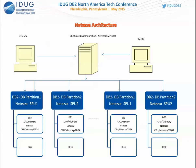In Netezza, the coordinator partition is called the SMP host — a Linux system running Red Hat Enterprise Linux. The SMP host accepts all client SQL requests, breaks them down, and distributes work to individual SPUs (Snippet Processing Units). Think of SPUs like database partitions in DB2 DPF. Each SPU has its own CPU, memory, disk, and FPGAs — that's the extra component. Each SPU does its part of the work, returns data to the SMP host, which merges all results. The architecture is very similar to DPF.